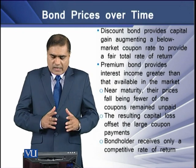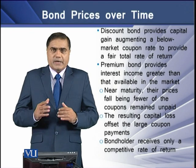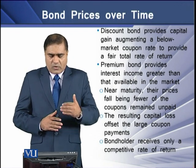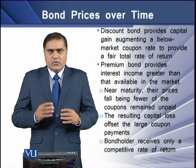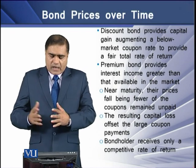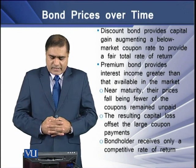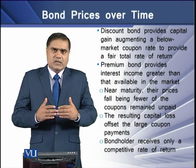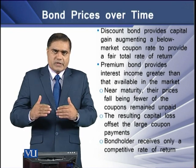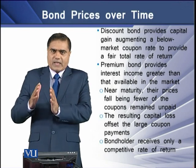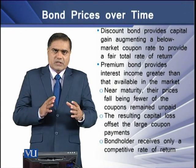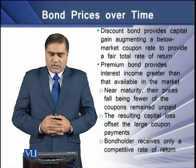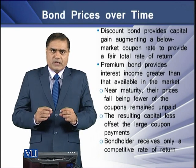Premium bonds, by contrast, provide interest income greater than what is available in the market. Near maturity, the prices of premium bonds fall because of the few remaining coupon payments. The resulting capital loss offsets the large coupon payments, since the bond price is falling near maturity. Capital gains available in the early life of the bond are depleted and convert into capital losses, which are offset against the larger coupon payments across the bond's life. Bond holders still receive only a competitive rate of return with premium bonds.